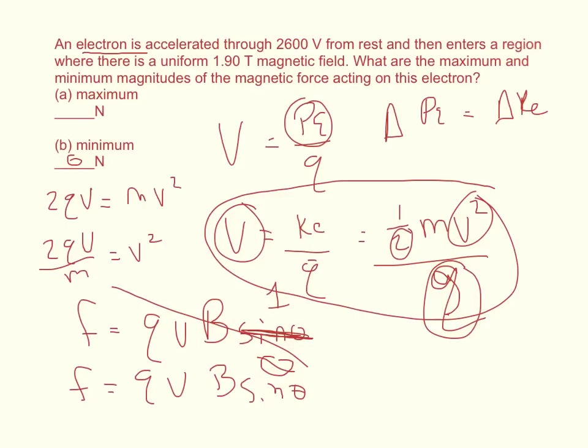I'll just take the square root of this term and it will equal the velocity. So the maximum force is equal to Q times the square root of 2QV over M times the magnetic field.